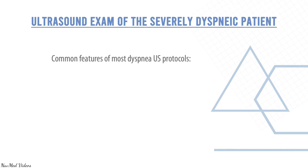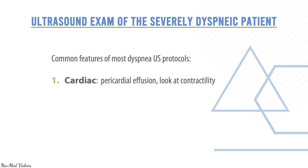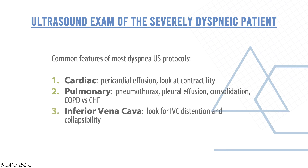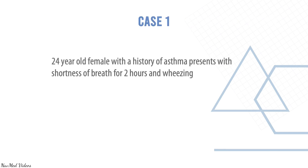Common features of most dyspneic patient ultrasound protocols include cardiac assessment such as pericardial effusion and contractility, pulmonary assessment such as pneumothorax, pleural effusion, consolidation, and COPD findings, inferior vena cava distension and collapsibility, and some protocols also look for DVT in both legs.